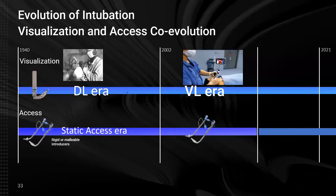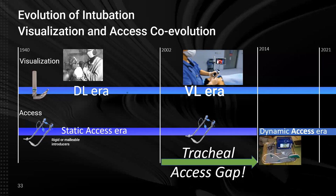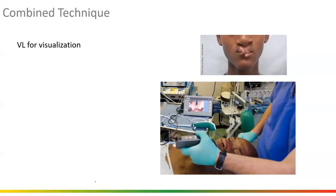Back to our evolution and co-evolution table: tracheal access gap — the static access era has gone on too long. Around 2012 to 2014 is when people started using fiber optic bronchoscopes as dynamic stylets, and that began the dynamic access era.